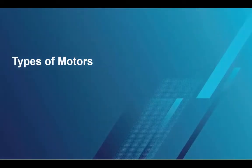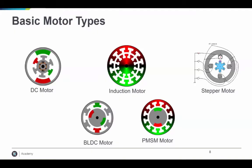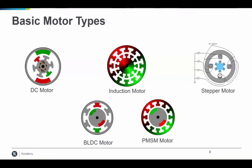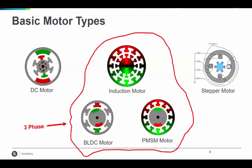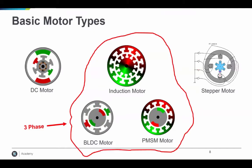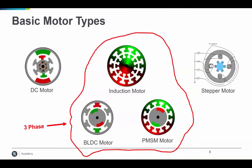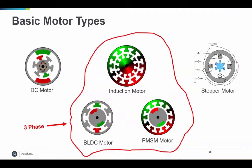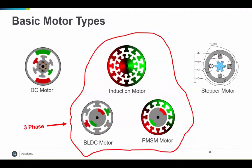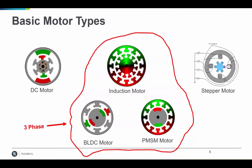Now let's look at the different types of motors. Here are some basic motor types: simple DC motors, and three-phase motors which include induction motors, brushless DC motors, and PMS motors. There are also stepper motors, which are used for precise positioning.